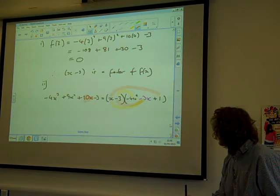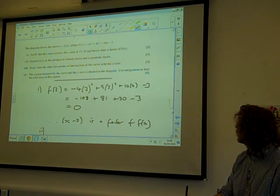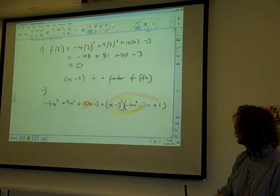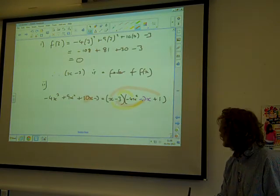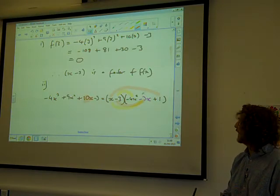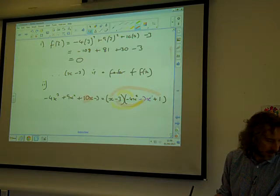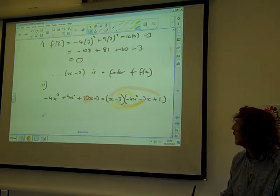And the question said, write it as a linear factor and a quadratic factor. So there is (x - 3)(-4x² - 3x + 1). It's not the neatest thing starting with that minus, but it's fine. There's our answer. We're really happy with that. Part 3.